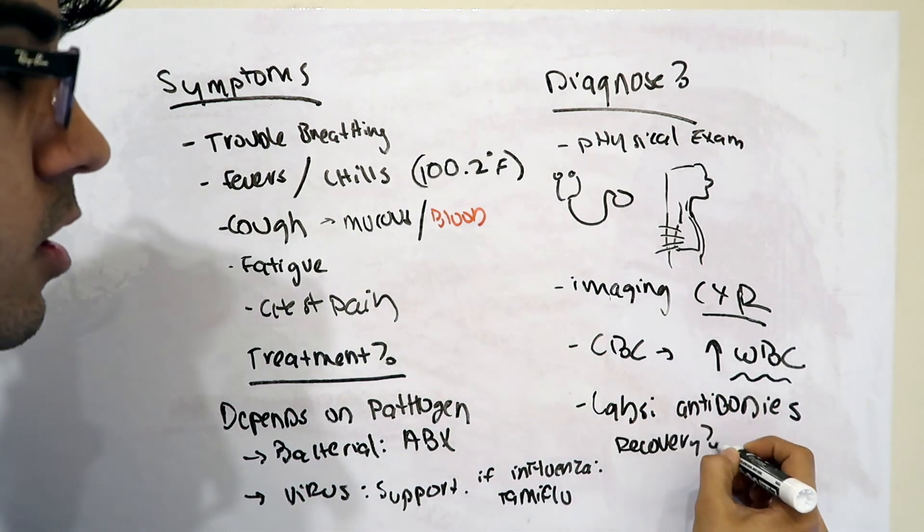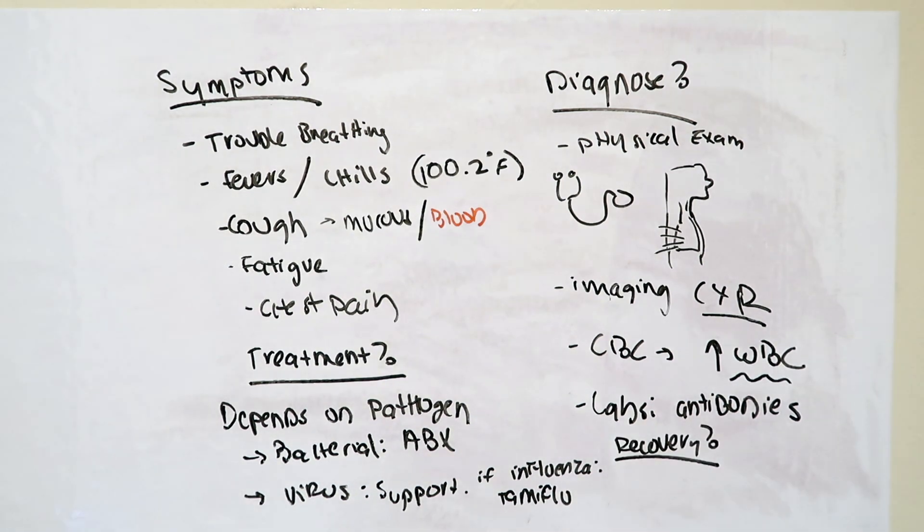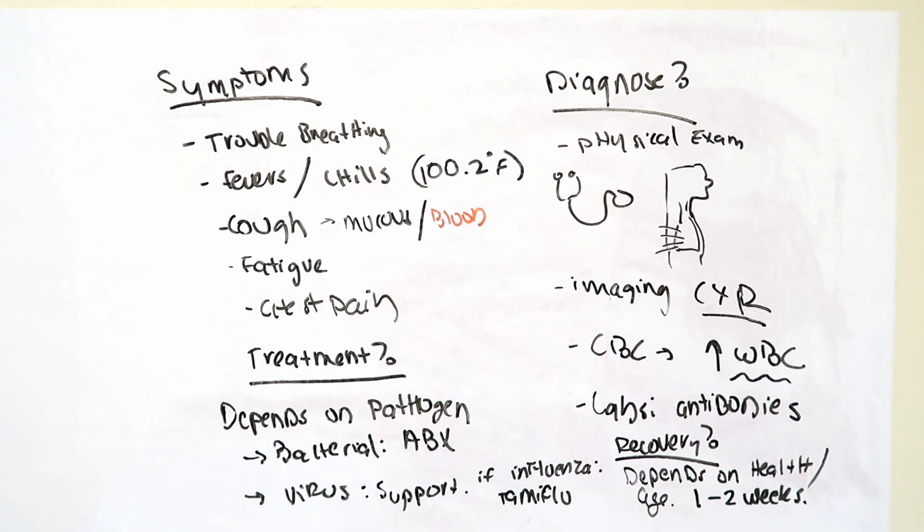What does the recovery look like for a patient with pneumonia? That really depends on the patient's age and health. However, without too many confounding factors, typically ranges between one to two weeks or longer. I hope that was helpful information for you. Please like and subscribe for more videos. And please stay healthy.